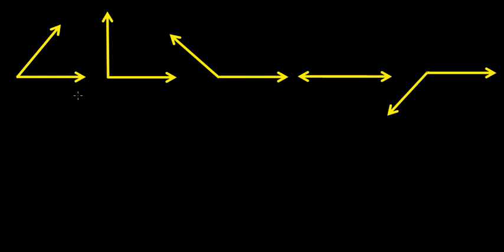In this video, I just want to introduce you about the types of angles. In this first diagram, you can see that if you measure this angle, it is less than 90. Generally, the angles are measured in degree or radian, so this is less than 90 degree. An angle whose measure is less than 90 degree, such type of angles are known as the acute angle.